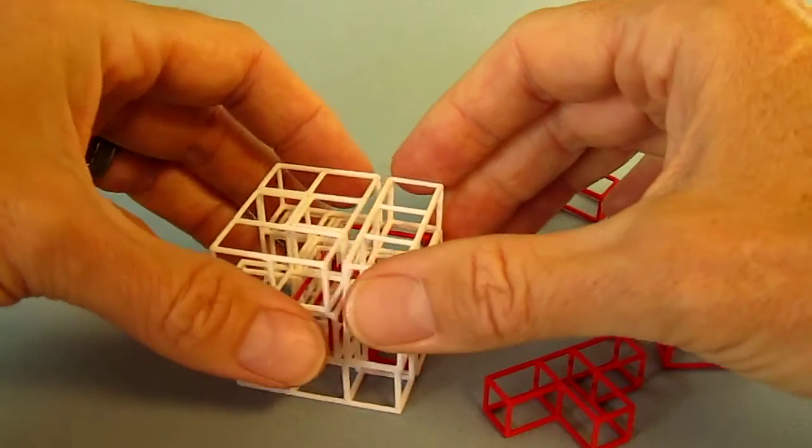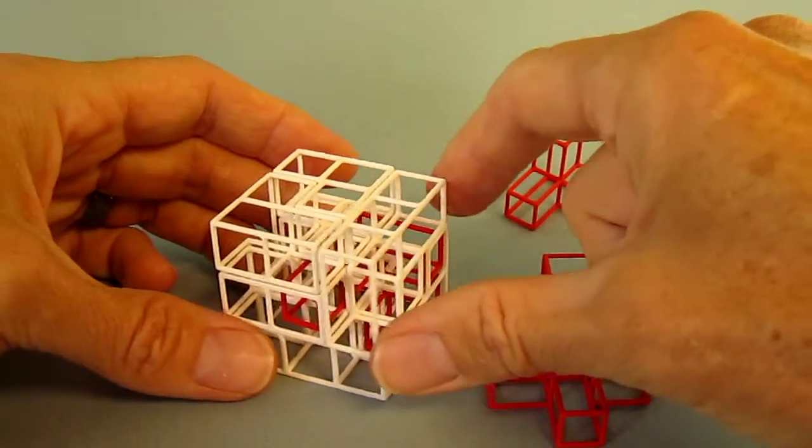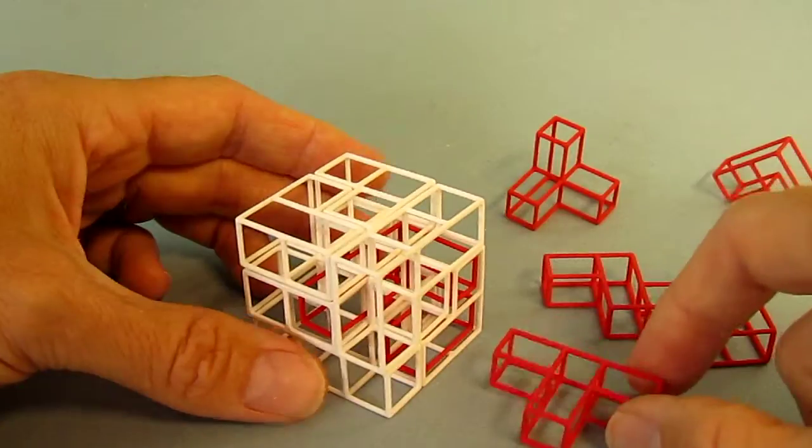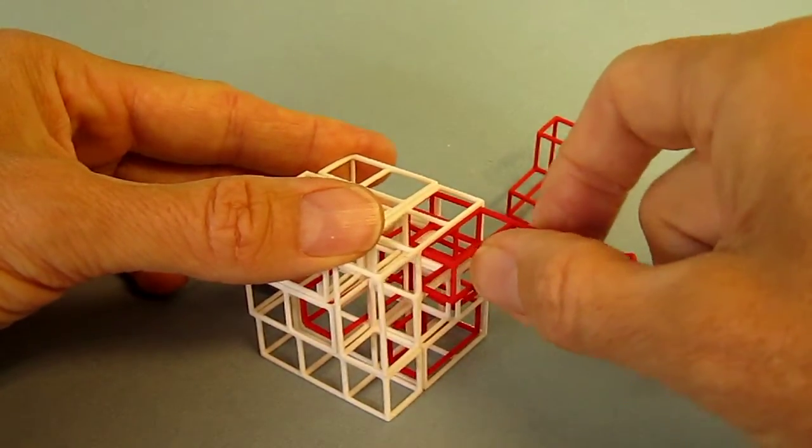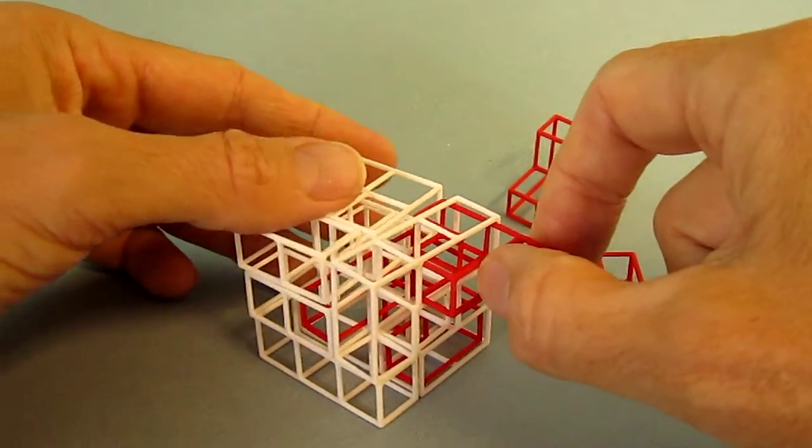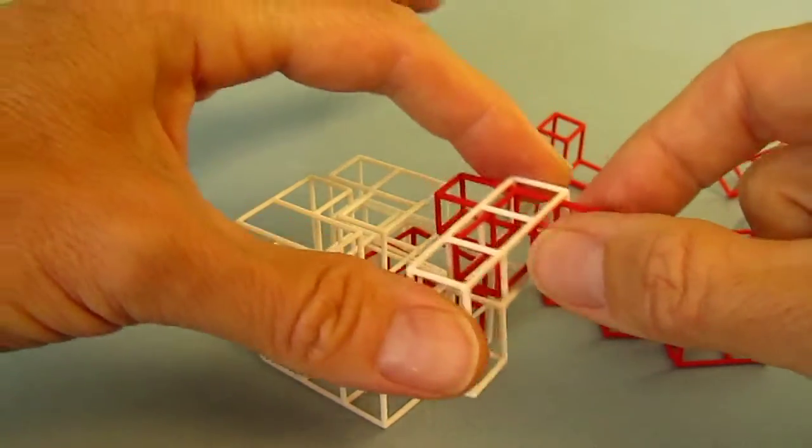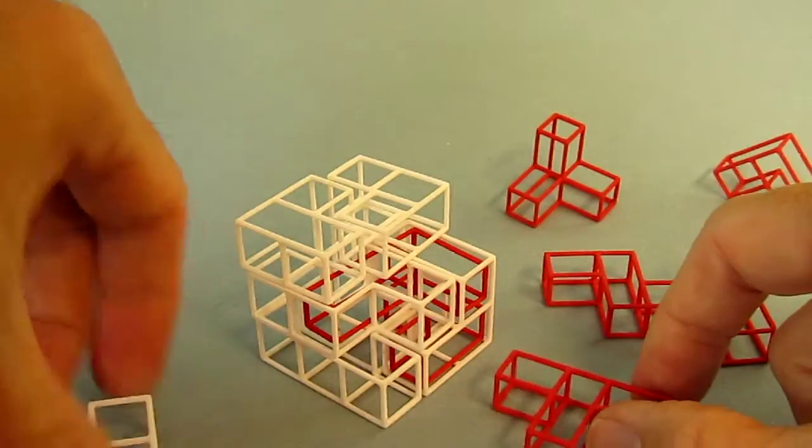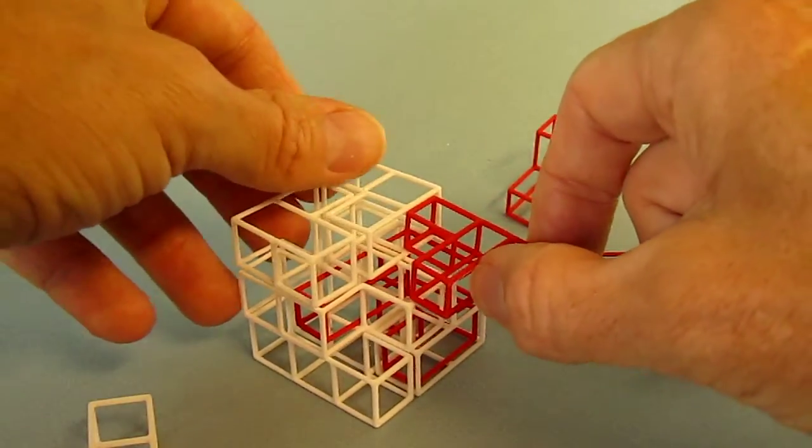So there's our cube shape. We want to try to put some more parts in interlocking. Now this one will slide in here but it will only slide in part way. It's blocked by a rod. So what we'll do is we'll slide it in.